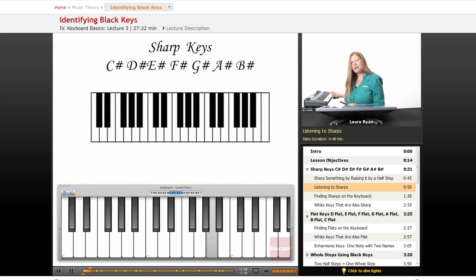Here's F, G, A, B natural, just plain old white keys. Let's add our sharp keys: F, F sharp, G, G sharp, A, A sharp, B. It's a smaller interval.